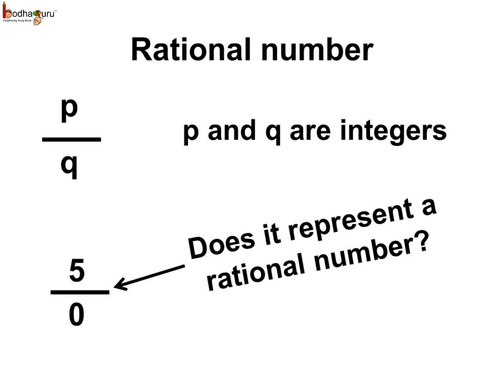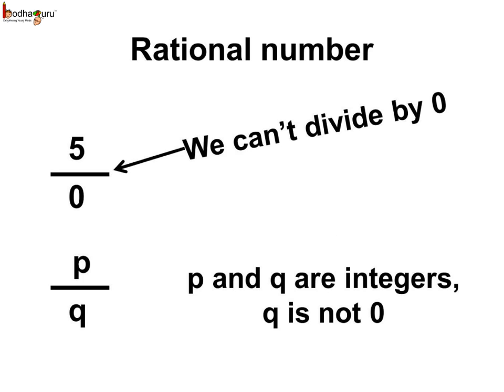So, is 5 by 0 a rational number? As we know, we cannot divide by 0. So, 5 by 0 is not a rational number. Thus, a rational number can be expressed as a ratio, P by Q, where P and Q are integers, but Q cannot be 0, as we cannot divide by 0.